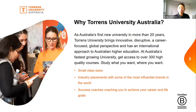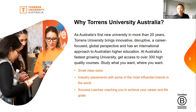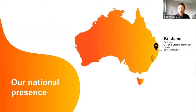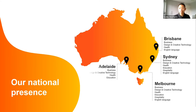Torrens University Australia is the first new university in Australia in more than 20 years. Torrens University brings an innovative, disruptive, career-focused, global perspective and has an international approach to Australian higher education. As Australia's fastest growing university, Torrens University Australia gives access to over 300 high quality courses — study what you want and where you want. What makes us different from other universities in Australia? We have small class sizes, industry placements with some of the most influential brands in the world, and for every single student, a specific success coach to help you achieve your career and life goals. Our campuses are in four cities: Adelaide, Brisbane, Melbourne, and Sydney.